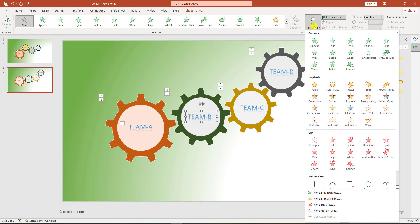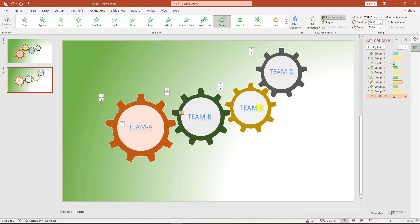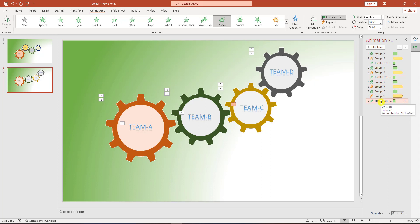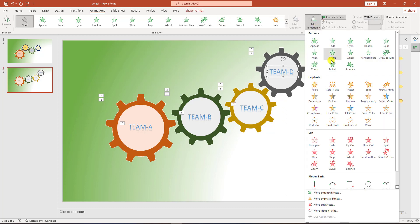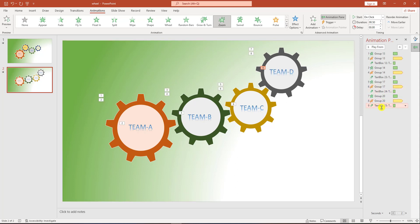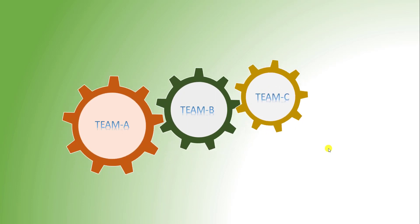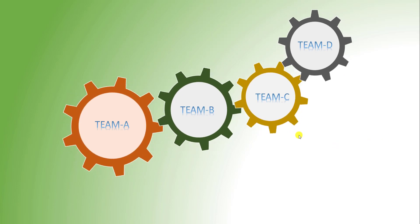Then click on this text box, go to Add Animation, go to Zoom, and set it to With Previous. Then move it over here. Select this text box, go to Add Animation, go to Zoom, move it right there, and click on With Previous. Then go to this text box, go to Add Animation, go to Zoom, and select With Previous.